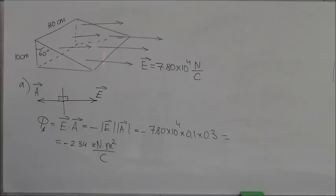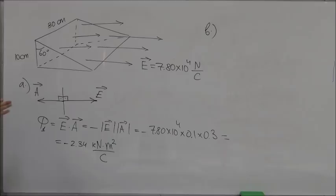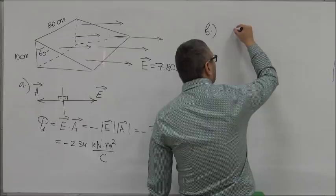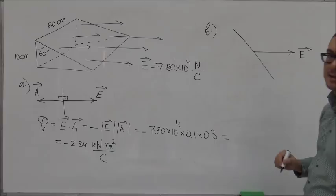Now the second part is asking us to calculate the electric flux through that slanted surface. Let's draw another picture for that. Again, we assume that we are looking at the prism from this side. If we do that, then this is the slanted surface, this is the direction of the electric field.